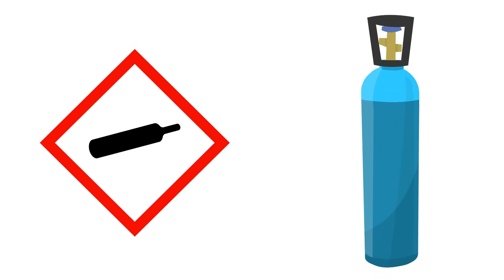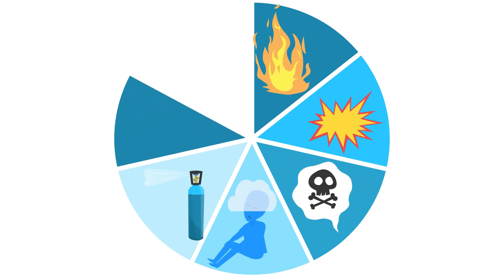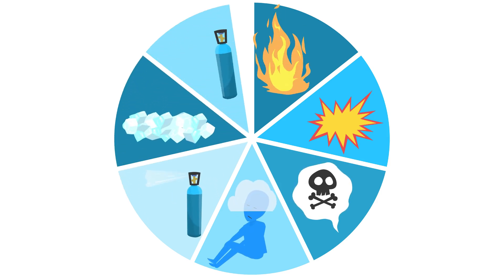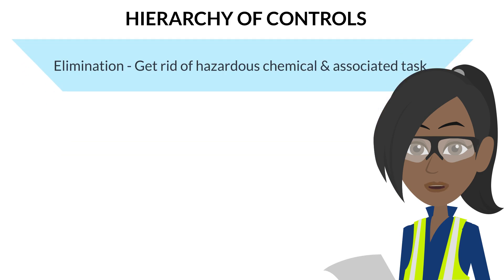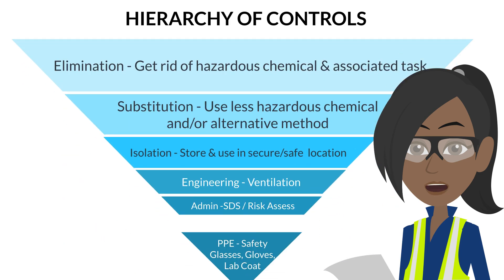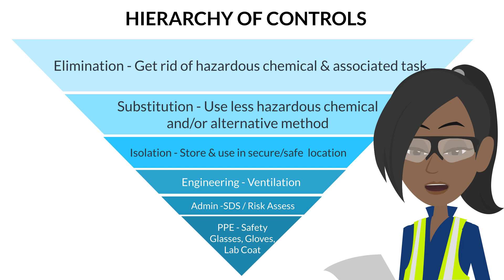The gas cylinder silhouette signifies pressurized gas. The critical hazards are fire, explosion, poisoning, asphyxiation, injection injuries, cold burns, and cylinder mishandling. Other considerations are that users should seek specialist advice and undertake specific hazard mitigation training.